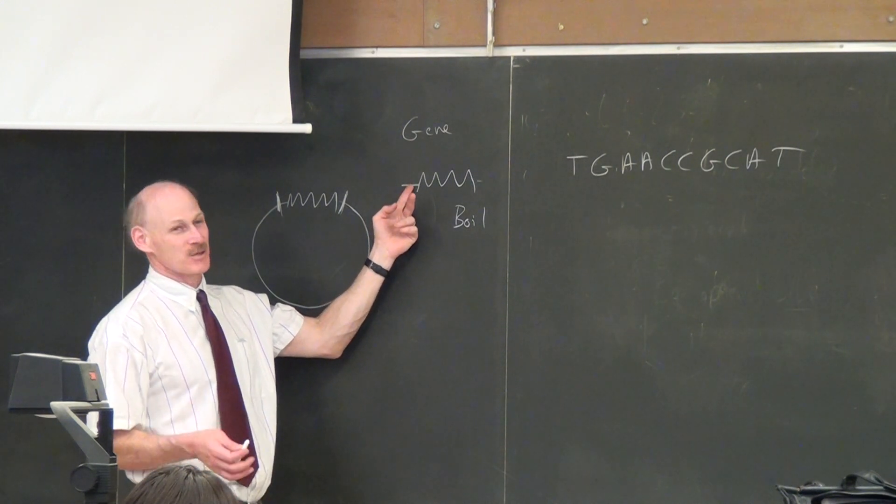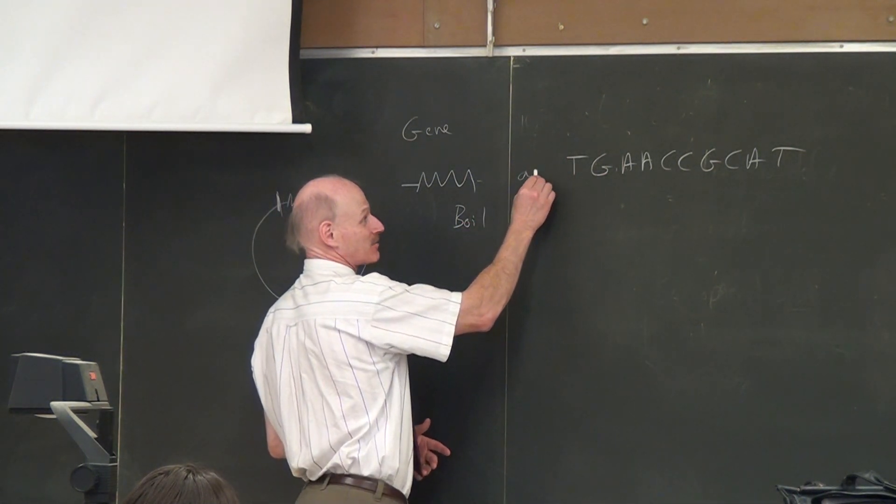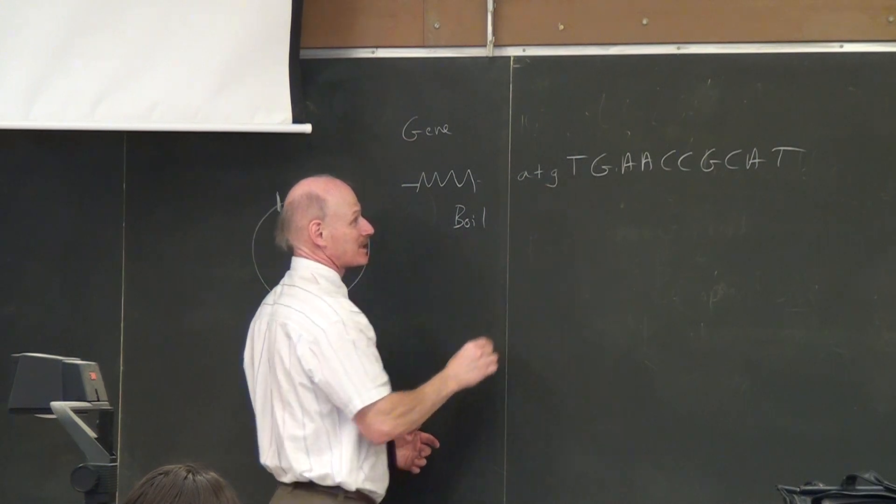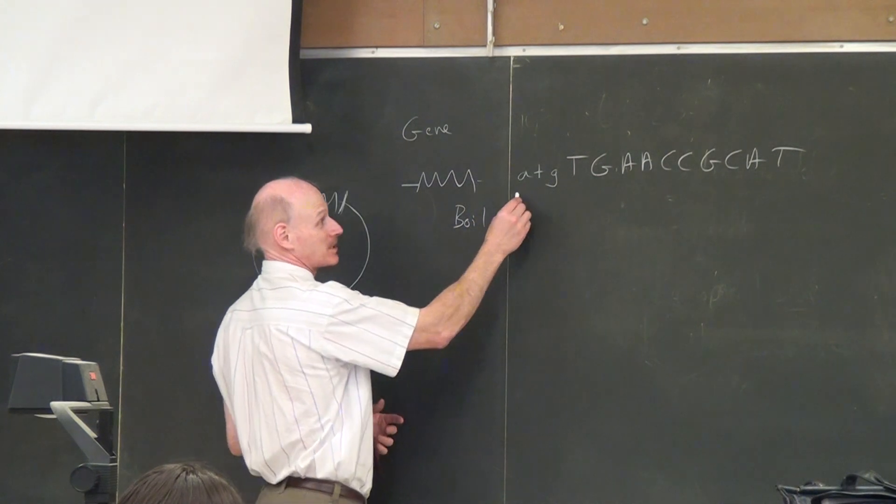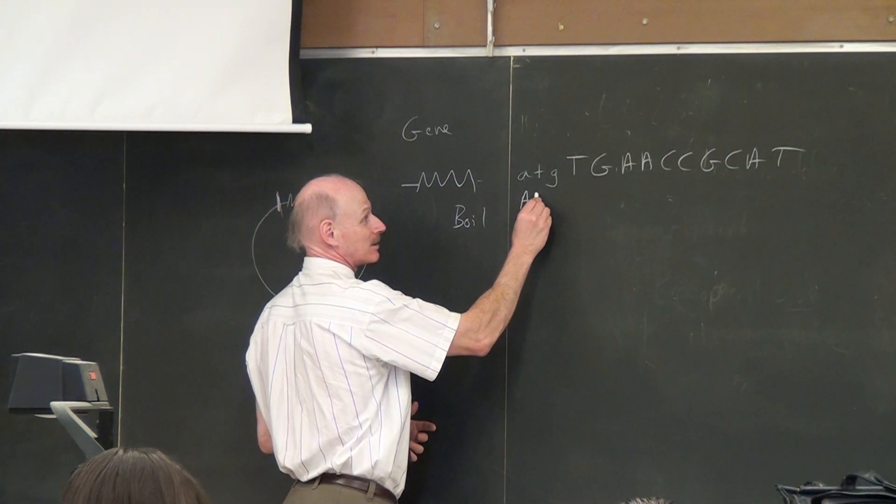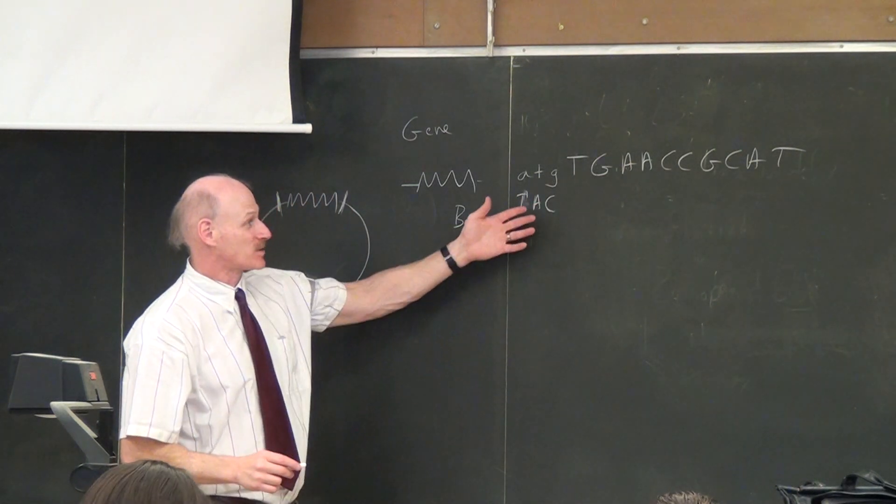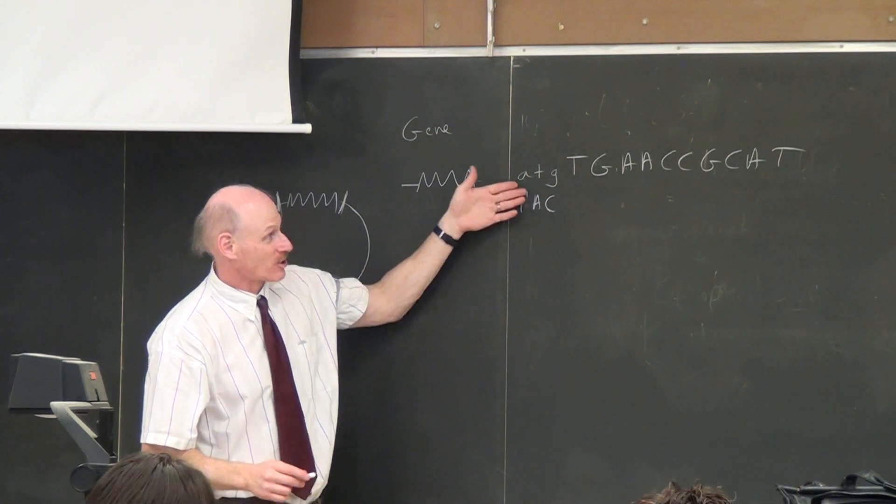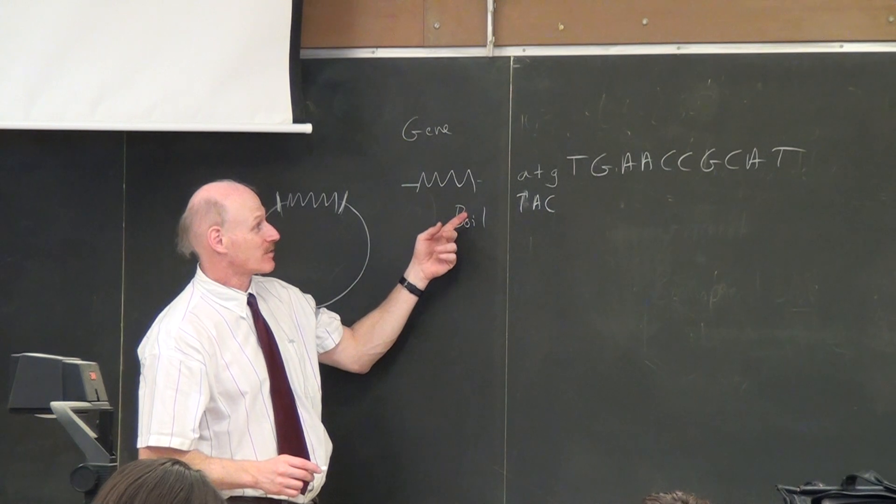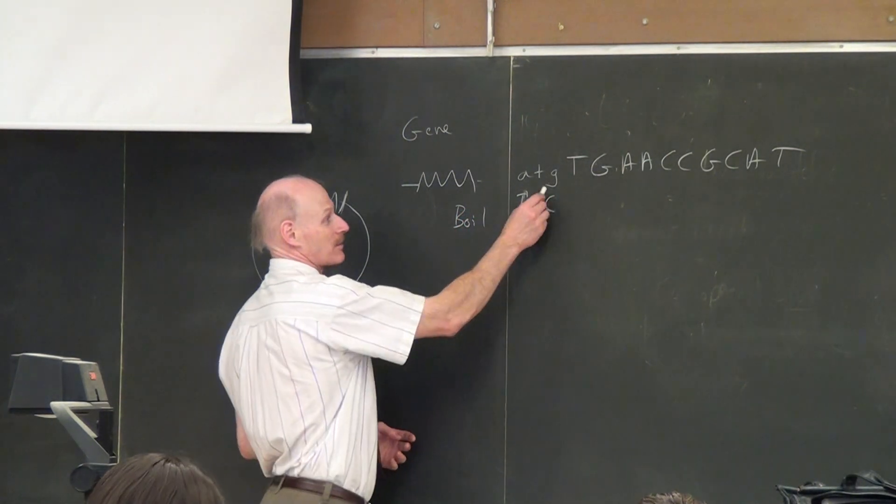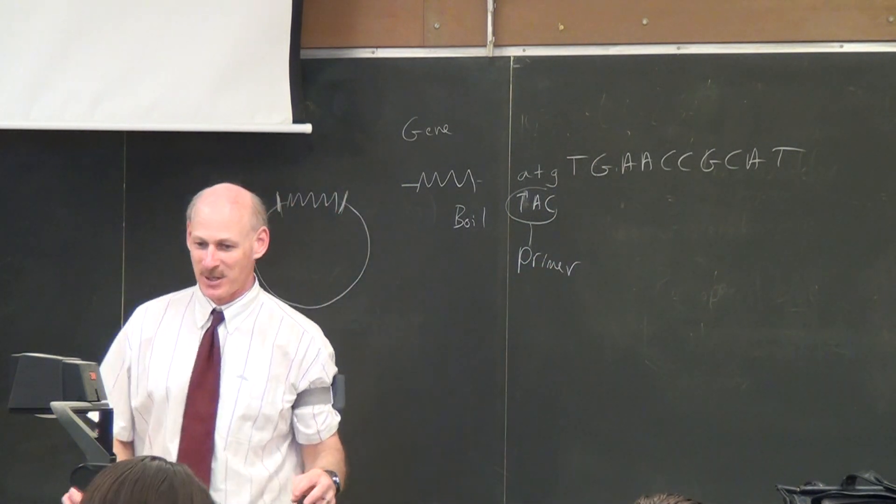But that's okay because if we have a bit of the plasmid sequence, a little upstream of our gene, we know the plasmid sequence. The people who supply us the plasmid will give us that. So let's say that the plasmid sequence, just to make this up, I'm going to use lowercase letters here. Let's say that's part of the plasmid sequence there. Well, I can buy a primer that's complementary to that.